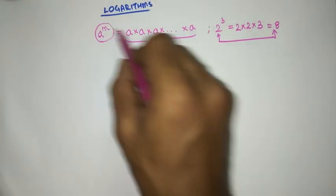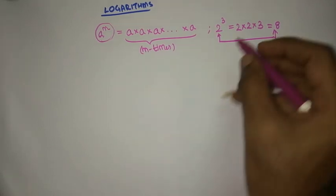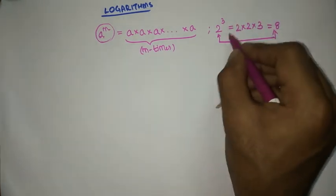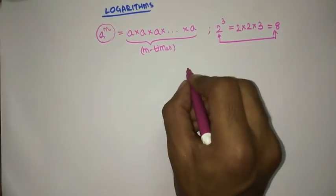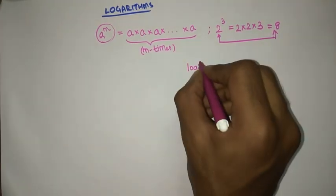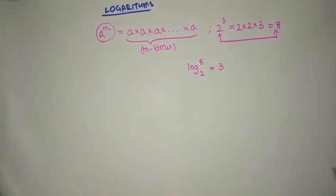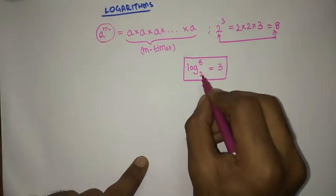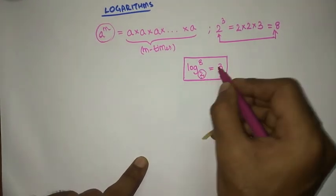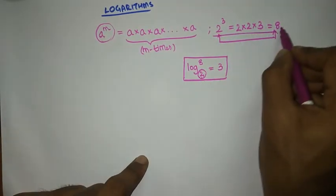Logarithms is a different way of looking into this exponents and powers. So I am going to write this 2 power 3 is equal to 8 in a different way — in logs: log 8 to the base 2 is equal to 3. This conveys that you need to multiply 2, 3 times to get 8.